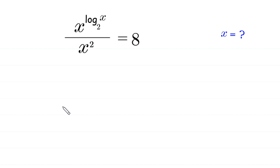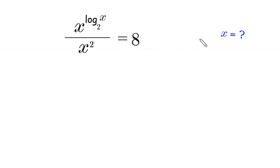Hello, welcome to how to solve this very nice exponential equation: x to the power log base 2 of x, divided by x squared, is equal to 8. We need to find all possible values of x, so let's start.